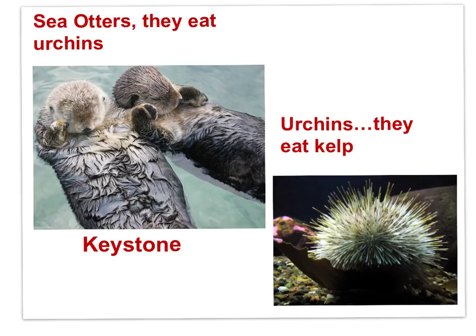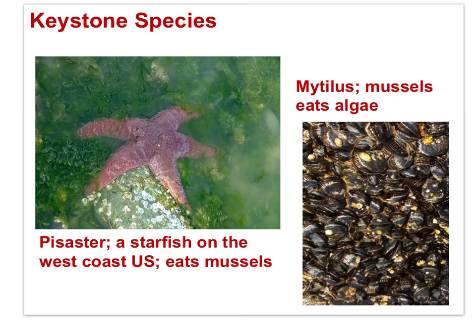The first example of a keystone species is the sea otter. The sea otter eats urchins, and the urchins eat kelp — the producer in the system. In ecosystems where the otter has been removed, the urchins bloom and consume all the kelp, and the ecosystem collapses. Pisaster, a starfish, is also a keystone species. Pisaster feeds on mussels, and without Pisaster, the mussels bloom, reducing the algae. Without algae as a producer in the ecosystem, the ecosystem collapses.